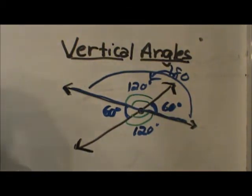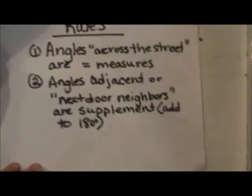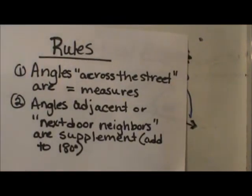They are very simple once you get the hang of them. So let's look at the rules of vertical angles. Angles that are across the street neighbors are congruent, and that is what a vertical angle is: across the street neighbors. Then angles that are adjacent or next door neighbors are supplementary, or they add up to 180.